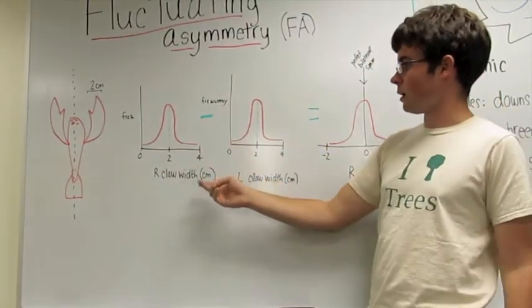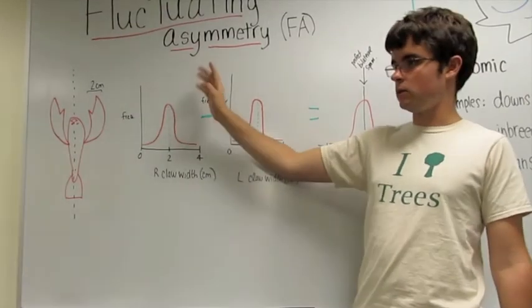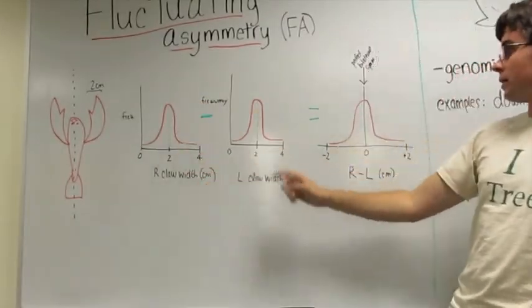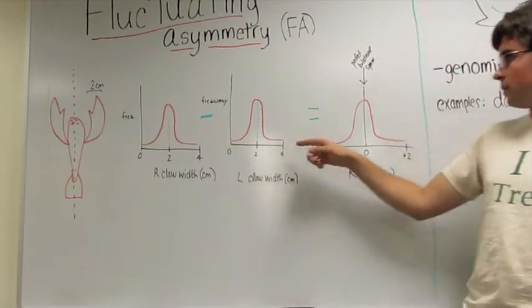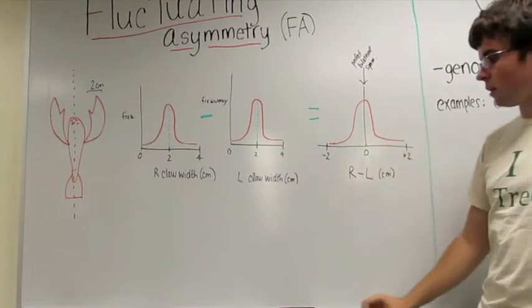As you can see with these graphs, the average lobster has a two centimeter wide claw on the left and on the right. If you look at the bell curve here, for the average lobster, there's zero fluctuation.